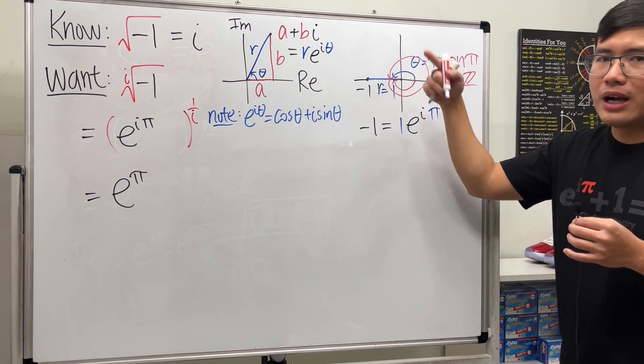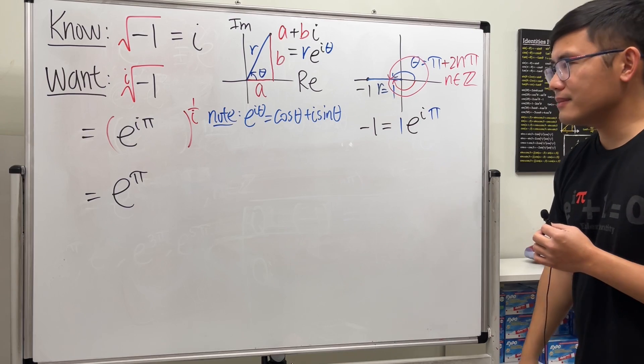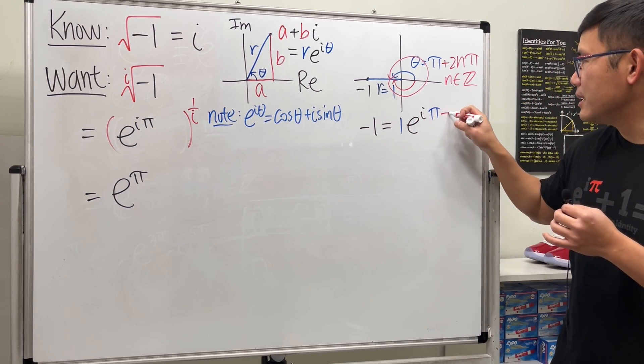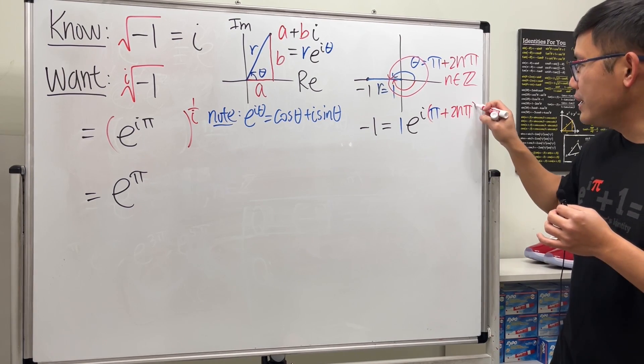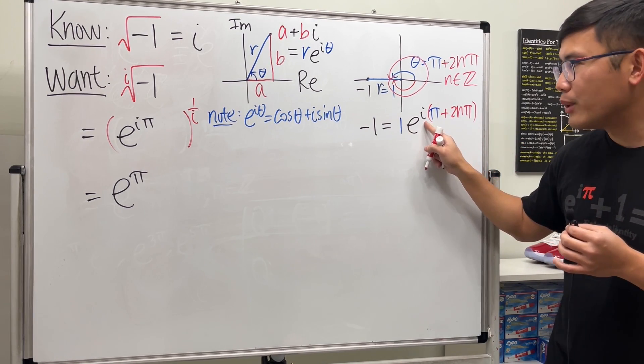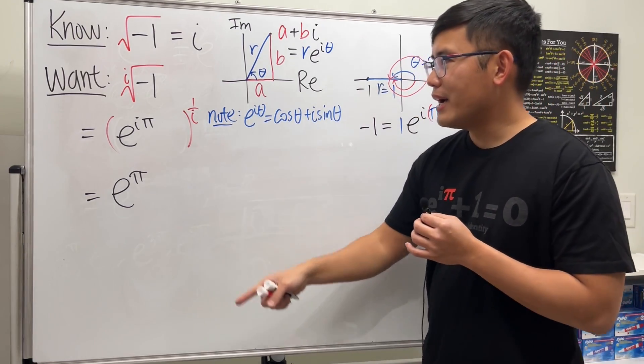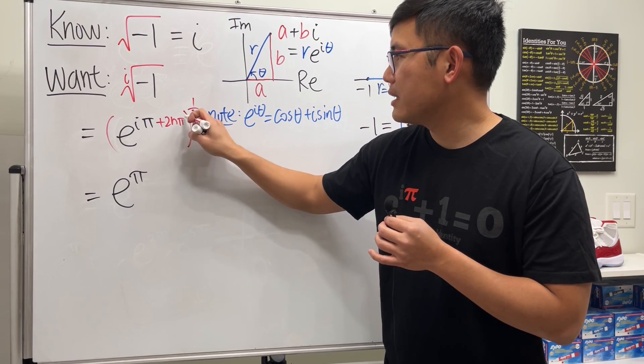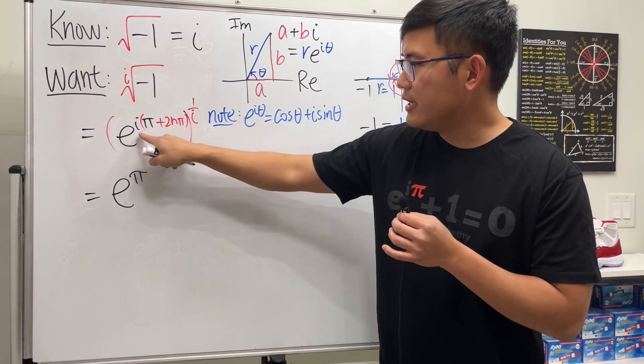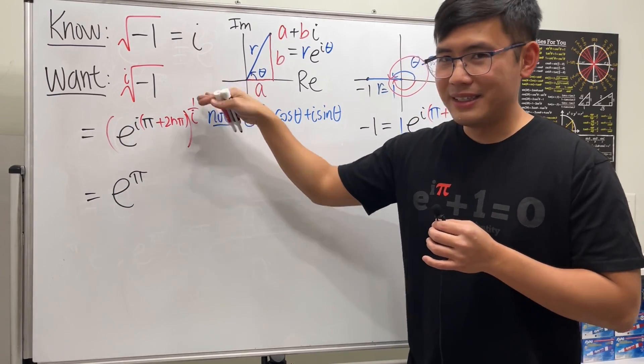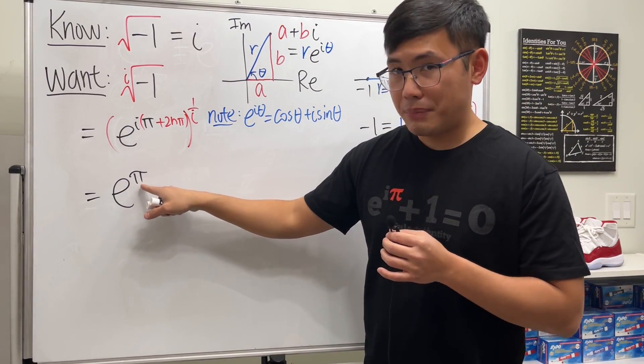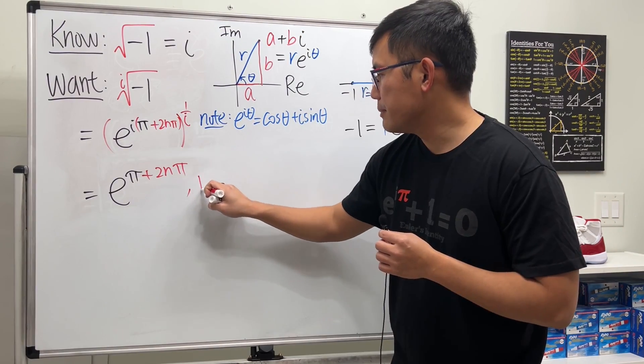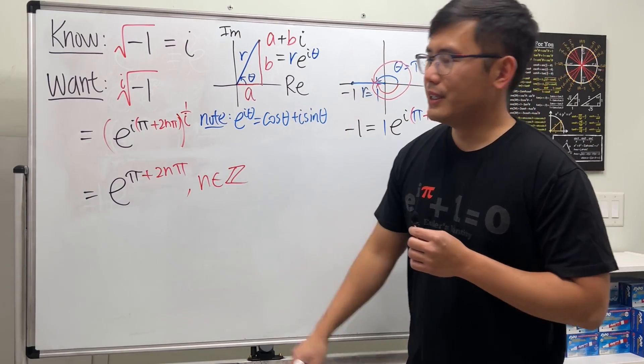That means you can do however many rotations that you want. So we will come here; instead of pi, we will write pi plus two n pi right here for the angle, and then multiply by i. And all that—that's why I left a space right here, because I will have to add two n pi here. And of course this is still really nice because the i and one over i cancel, so we get e to the pi plus two n pi, where n is an integer.